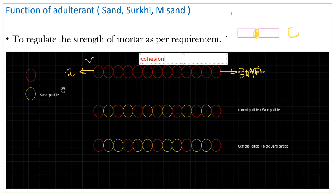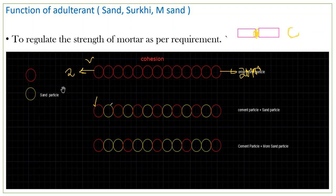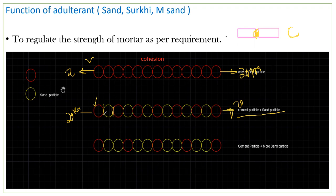Now take a second case: the red color represents cement particles and the yellow color represents sand particles — cement, sand, cement, sand, and so on. If I apply 20 kilonewtons from both sides, the cement and sand particles will still be able to resist that force because there exists cohesion between the cement particle and the sand particle, and as a result it is going to resist the load.